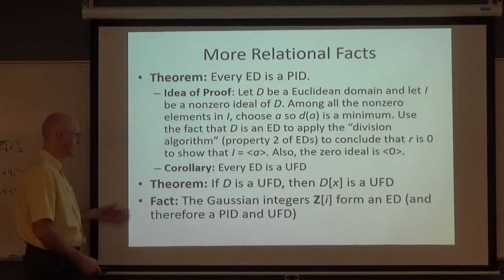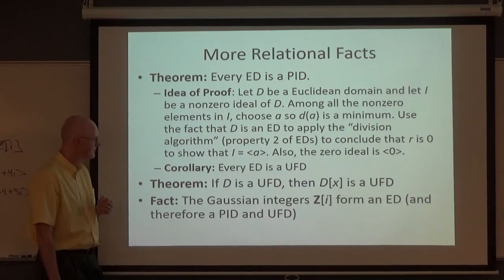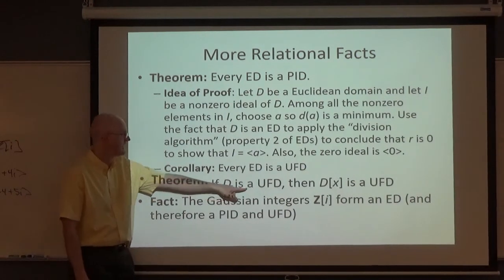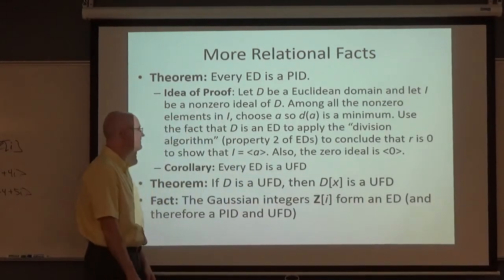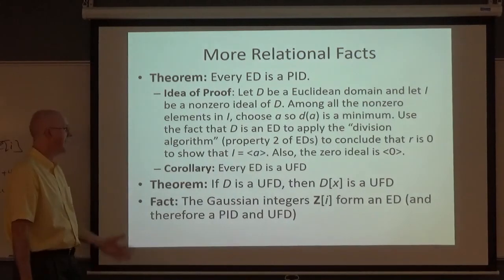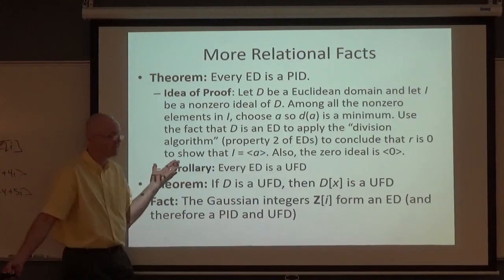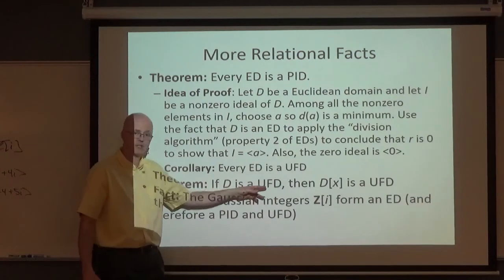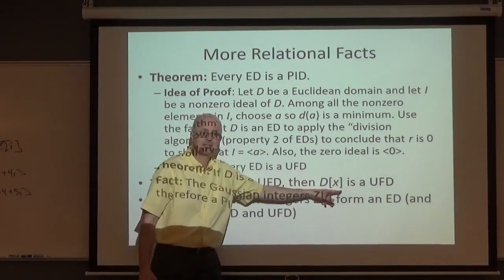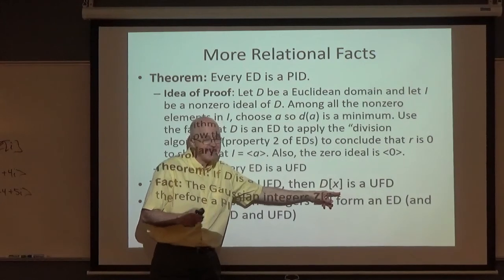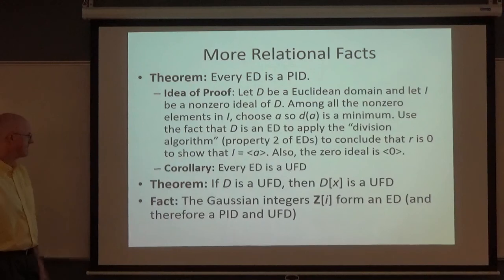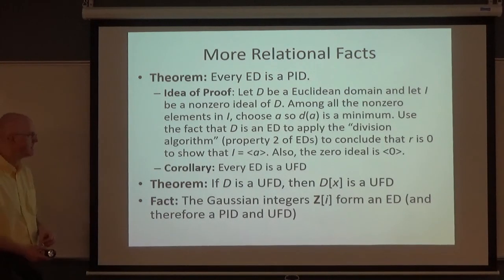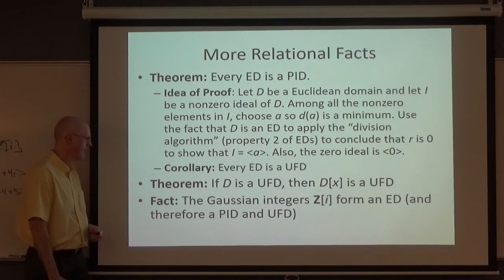A couple more facts: if D is a UFD, then its ring of polynomials with coefficients in D is also a UFD — analogous to what happens with Z, since Z is a UFD and Z[x] is too, even though Z[x] is not a PID. One more: the Gaussian integers do happen to form a Euclidean domain, and the measure is a² + b² as mentioned. All right, let's take the quiz.